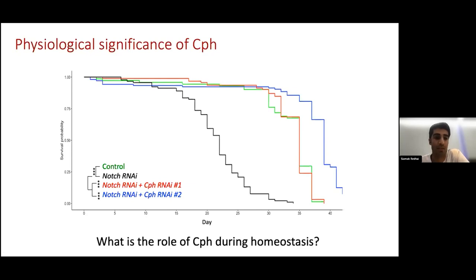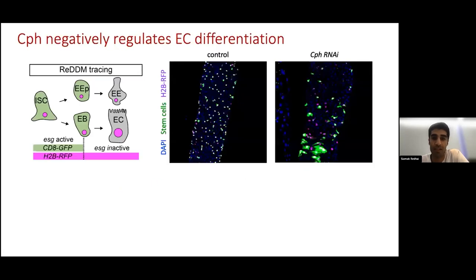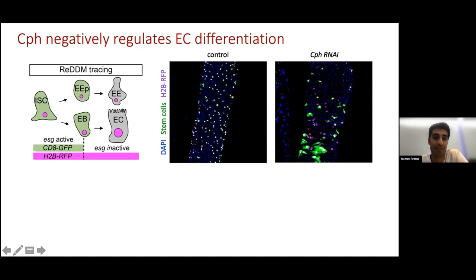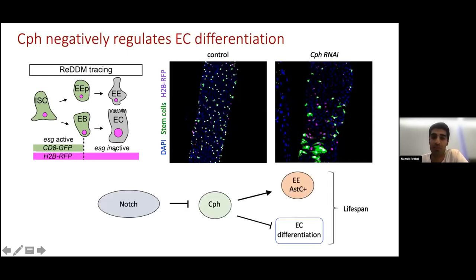We also wanted to understand the role of CPH during homeostasis. To investigate this, we used a lineage tracing system which initially marks stem cells and their progenitor cells in GFP and RFP. As these differentiate, RFP is retained and GFP is lost. When we knocked down CPH by itself using this system, we saw that the stem cell population decreased, but there was an increase in the number of differentiated cells with large nuclei — the enterocytes shown here. Our working model is that the notch pathway normally suppresses the expression of CPH, and that CPH is involved in regulating the balance between enteroendocrine cells and enterocytes, which ultimately impacts the lifespan of flies.